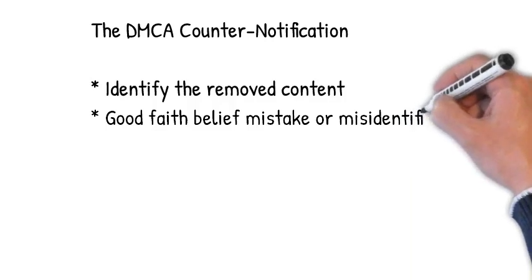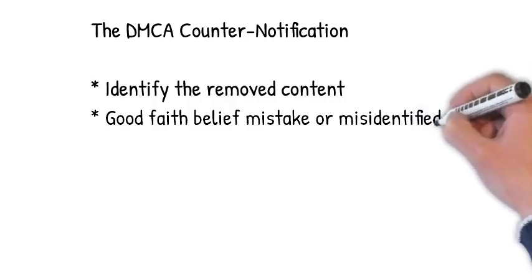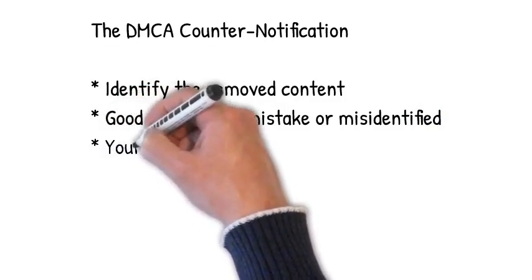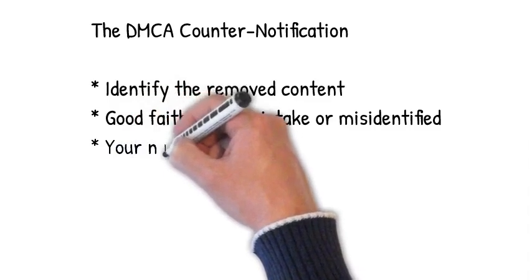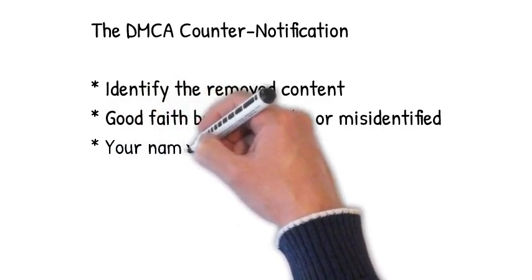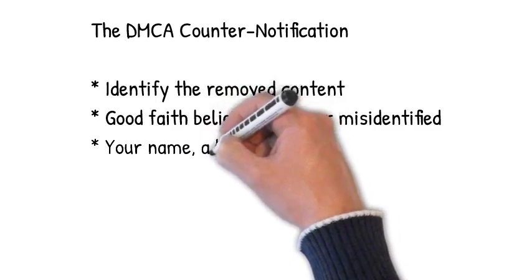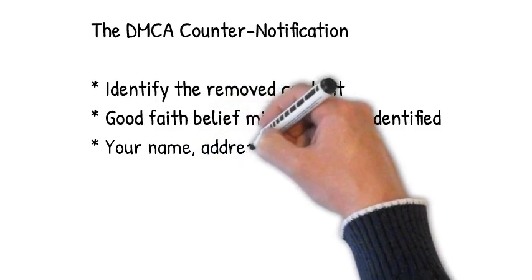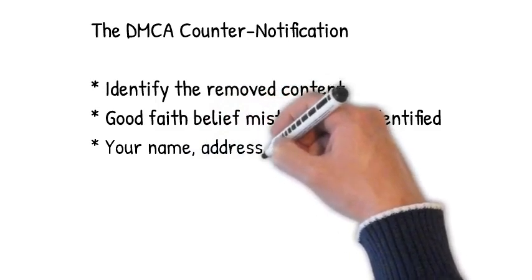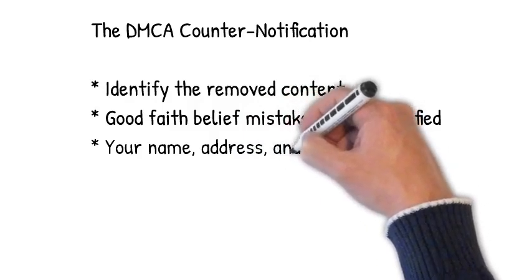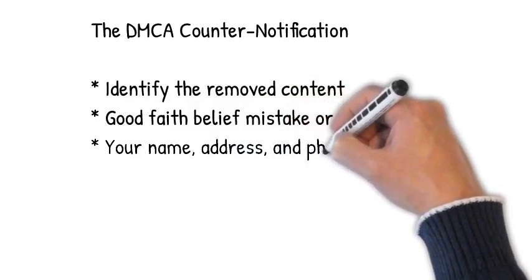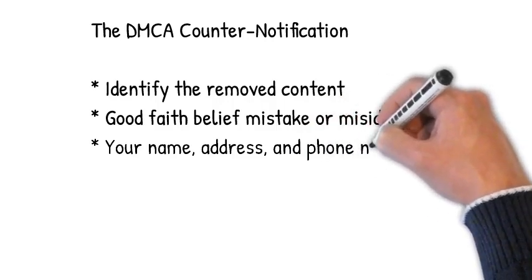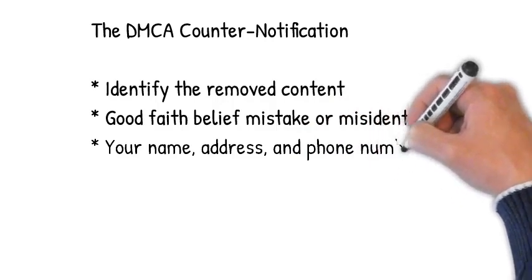The second step is to make a statement based on a good faith belief that the copyright owner has made a mistake or misidentified the content in question when they filed the complaint against you. You would be surprised how often this actually happens. We've seen a lot of cases, particularly with food photos, where copyright owners think a photo is theirs but it's actually somebody else's — if you have a burrito on a white plate, there's only so many ways that's going to look. Mistake or misidentified is actually a very broad category — for instance, mistake could include fair use defenses and things of that sort.